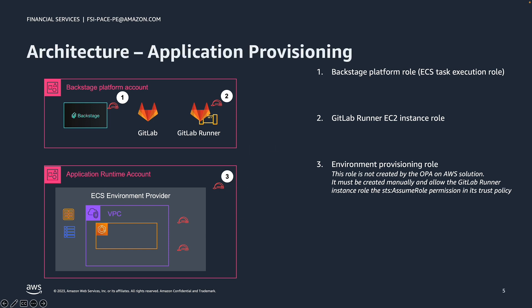With the runtime environment in place for business applications, the next workflow we'll cover is deployment of applications to the environment. This is a use case that is usually performed by an application developer. When the environment provider is provisioned, there is an IAM role created in the account which is responsible for provisioning application resources such as ECS services, S3 buckets, KMS keys, application load balancers, and other AWS resources required to run an application in the environment. The role that has permission to create these AWS resources is referred to as the application provisioning role. Application resources are created through infrastructure as code, and that infrastructure as code is executed as part of the application's CI/CD pipeline. The GitLab runner role also assumes the application provisioning role when the pipeline runs so that the AWS resources for the application are created.